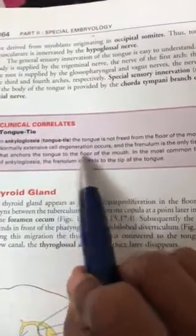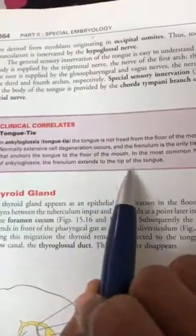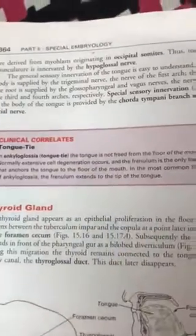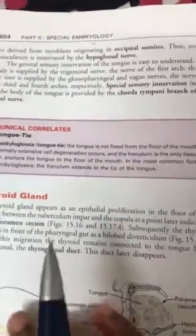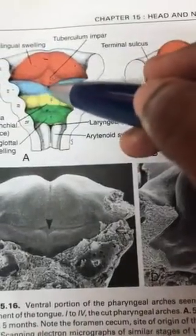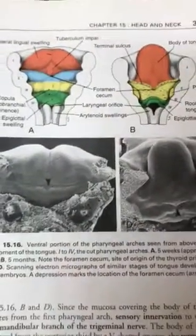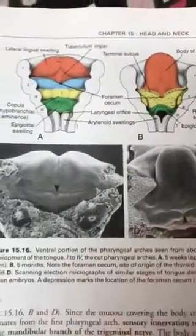Normally, cell degeneration occurs and the frenulum is the only part remaining attached to the tongue. If it fails to degenerate, the entire tongue stays attached to the floor — this is ankyloglossia. You can also mention bifid tongue and lingual cyst, which can occur near the foramen cecum. That is all about tongue development.